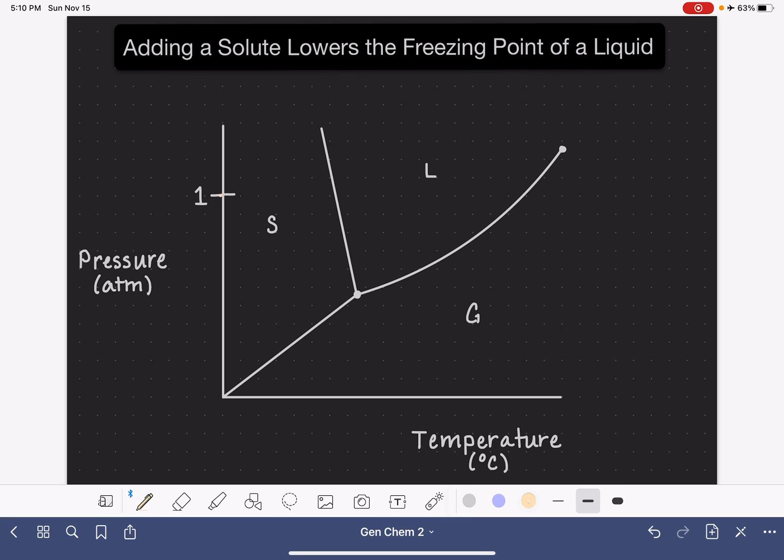And as you know, the way that we will do that is to start over here on the pressure axis at one atmosphere pressure, and we will trace across to the solid liquid line. We refer to this as the solid liquid equilibrium line. This is the pressure temperature combination that corresponds to solid being converted into a liquid or vice versa, freezing.